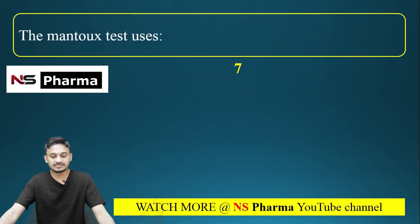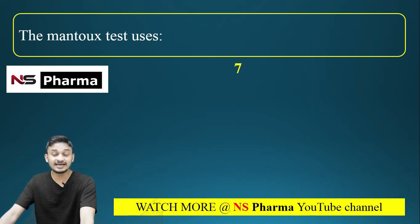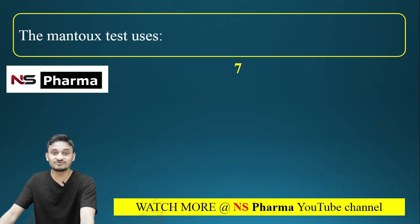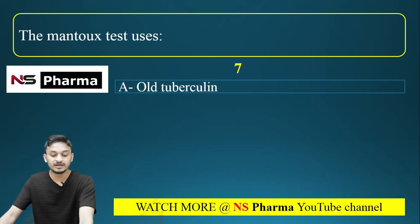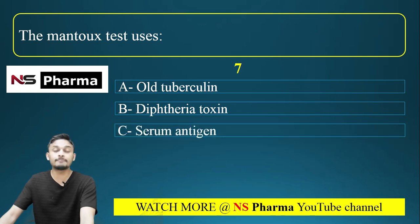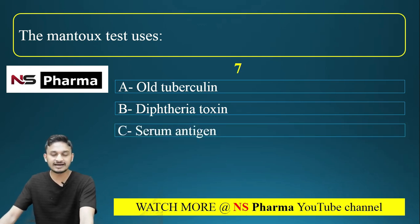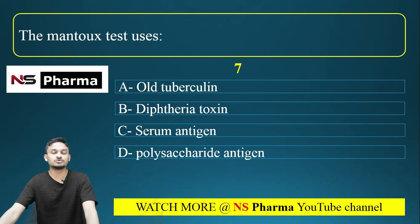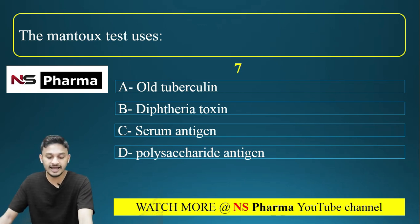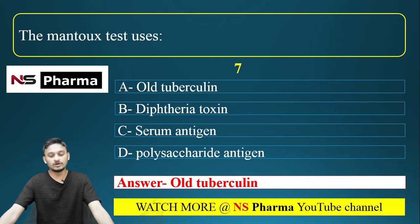Question number 7: The Mantoux test uses — the Mantoux test is a screening or diagnostic test for tuberculosis. Options are: option A, old tuberculin; option B, diphtheria toxin; option C, serum antigen; option D, polysaccharide antigen. The correct answer is option A, old tuberculin.